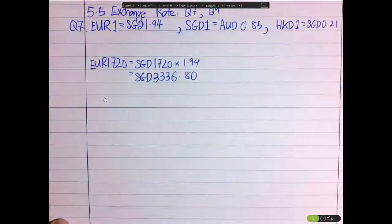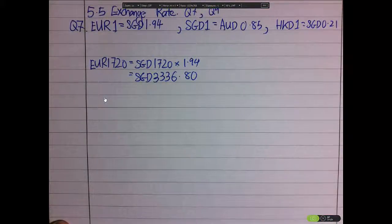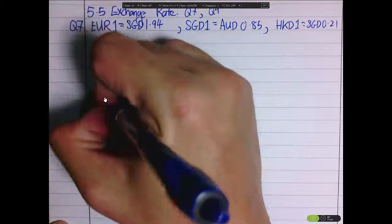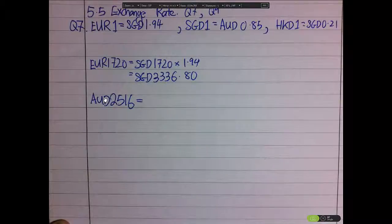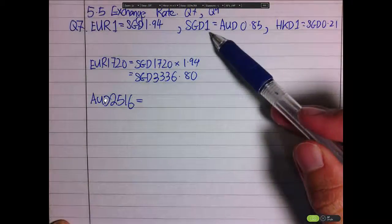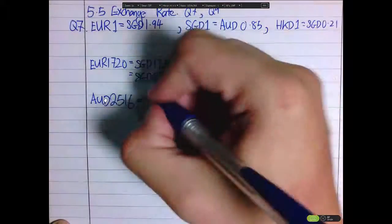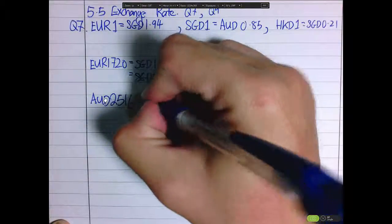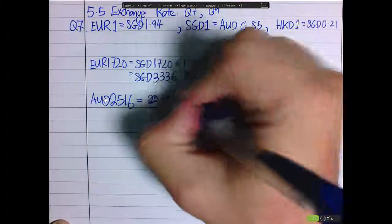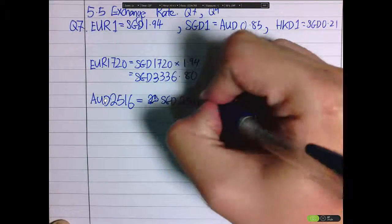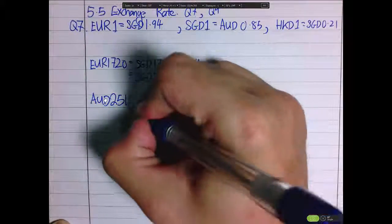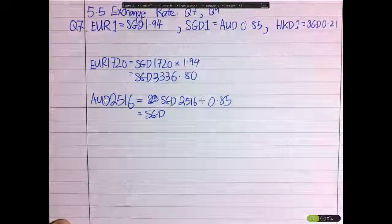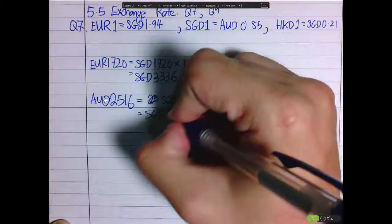That is for the EUR. Let's calculate for the Aussie Dollars. In this case we have to divide because the SGD is the one, so I'll take AUD 2516 divided by 0.85 and I'll get SGD 2960.